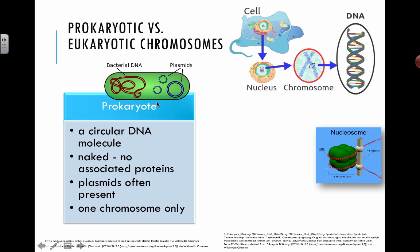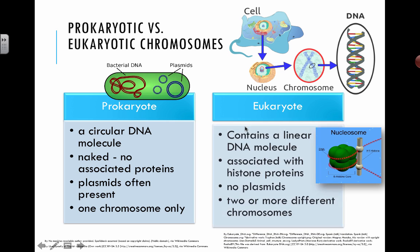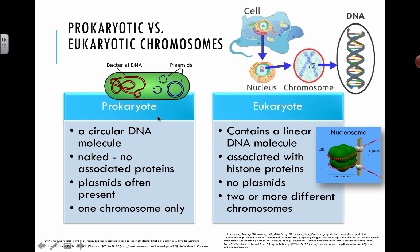Plasmids are present in prokaryotic cells, whereas in eukaryotic cells plasmids don't exist — it's just one chromosome only. In prokaryotic cells the DNA is a circular molecule, while in eukaryotic cells we're talking about linear DNA molecules organized into many different chromosomes. For humans we have 46 chromosomes, but for most eukaryotic cells there are two or more different chromosomes.